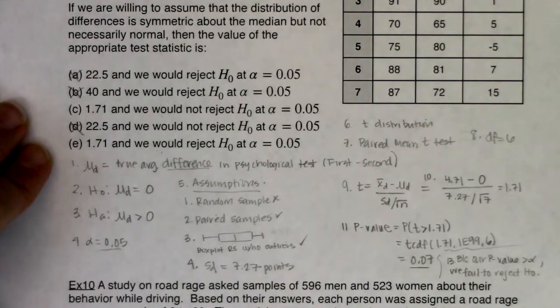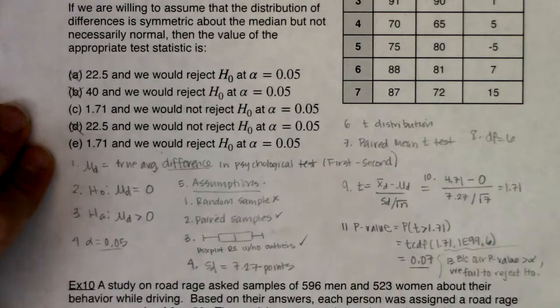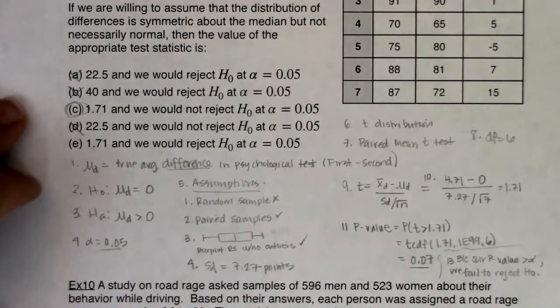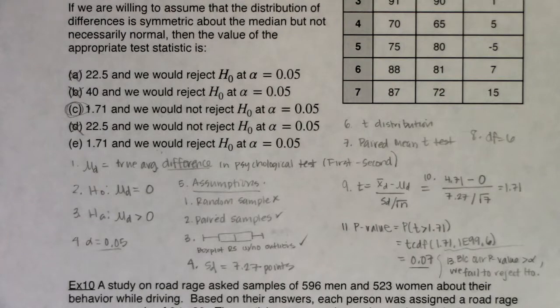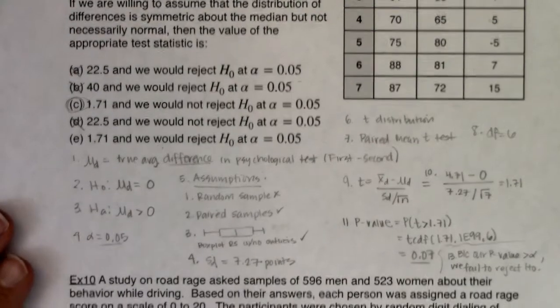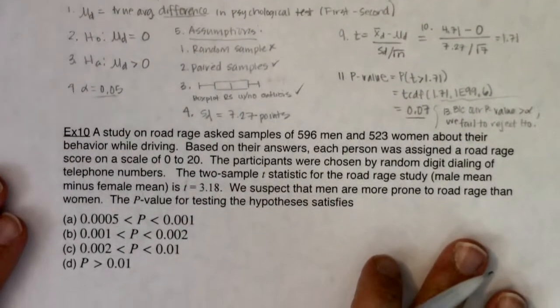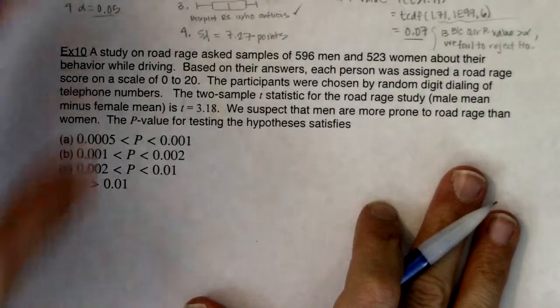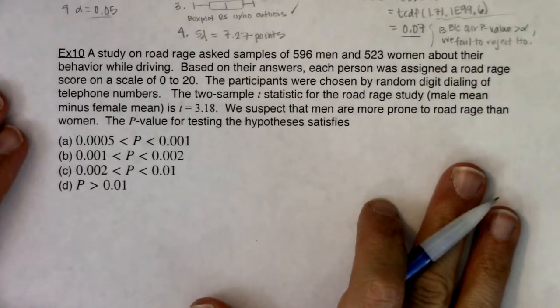We don't have evidence that the first born twin tends to be more aggressive than the second born twin. But ultimately, when I look at this, my answer is C. We would not reject H₀. So let's take a look at this last one and see if we can figure this one out. I'm going to scooch this all the way up so we have plenty of room to run this.